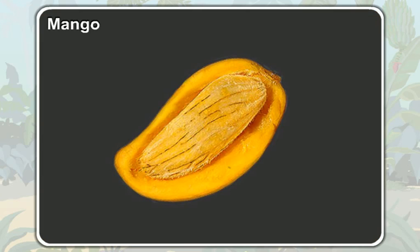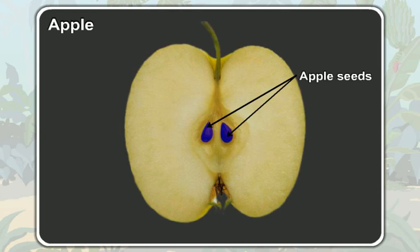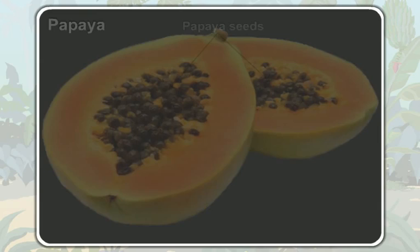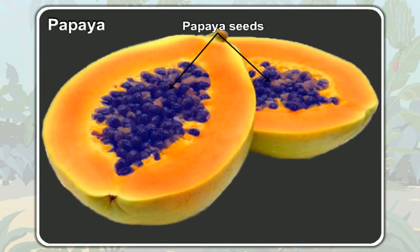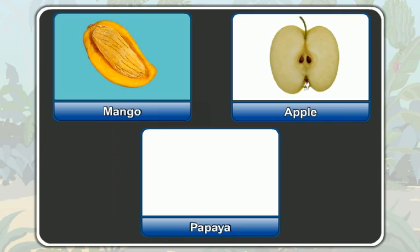Similarly, a mango seed is also enclosed inside the fruit. The apple seeds are also enclosed inside the fruit. The papaya seeds are also enclosed inside the fruit. None of them are naked.